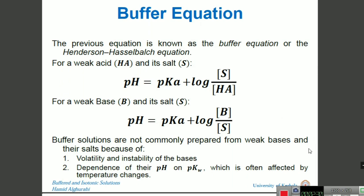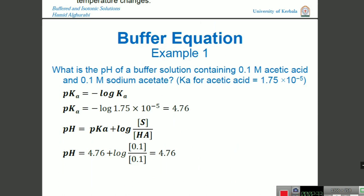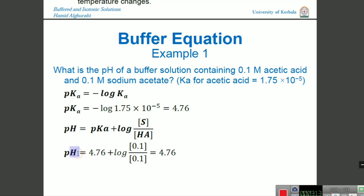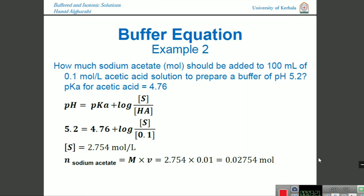Here is a numerical example: what is the pH of a solution containing 0.1 molar acetic acid and 0.1 molar sodium acetate? The pKa is given; we put that value into the formula pKa = −log Ka and, after consulting the log table, we find the value is 4.76. Substituting 4.76 into the Henderson-Hasselbalch equation gives us the pH of the buffer solution.